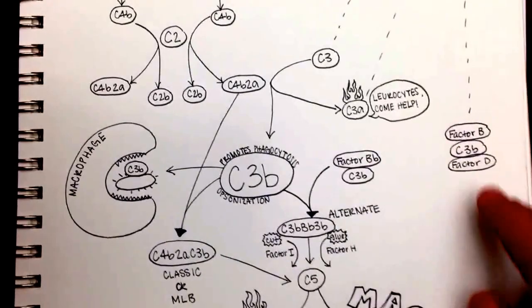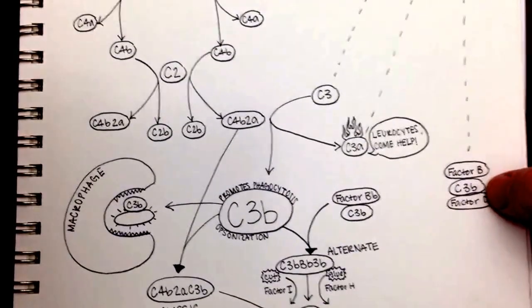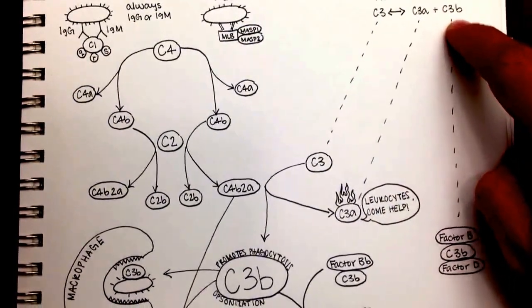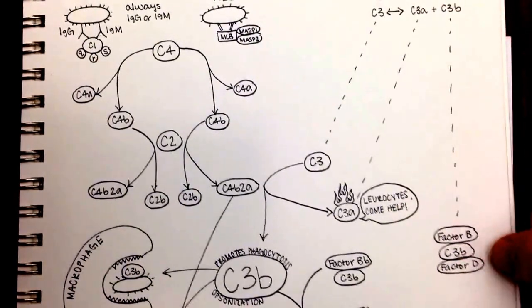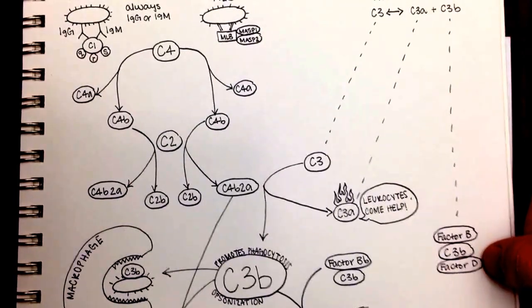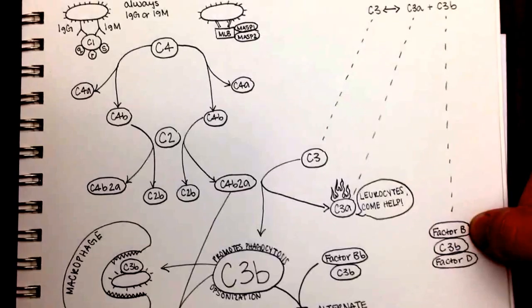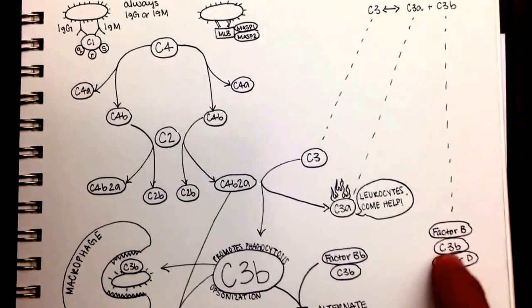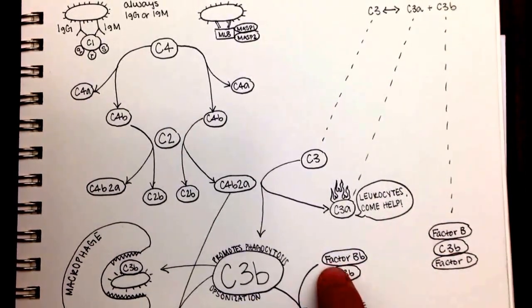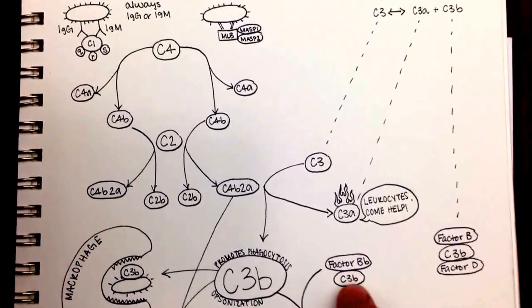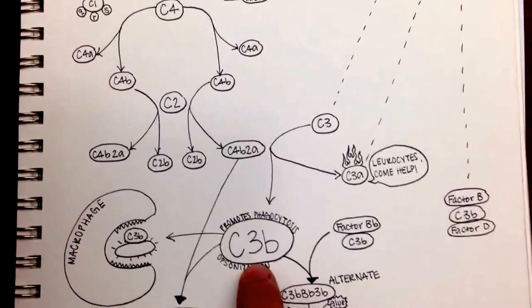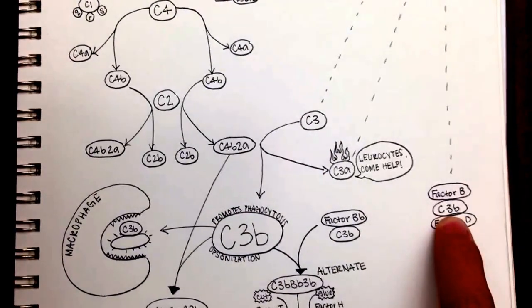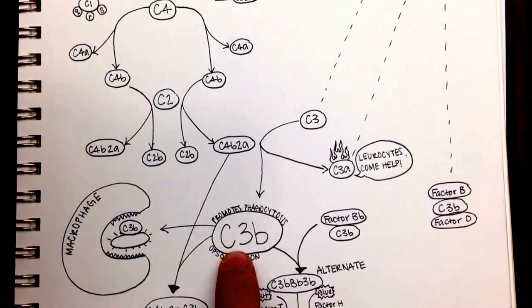So one of those C3b's from the alternate pathway, because it just spontaneously breaks into pieces, this C3b can bind to a cell along with factor B and factor D. And what those do all together is factor D will cleave factor B into an A and a B. And we can see here, we're going to keep the big part of factor B, which is going to be called factor BB, and it's going to stay bound with C3b. And so we're going to get factor BB, 3b, or C3b here. And this was our other C3b that came from these two pathways, the classical and the MLB pathway. And this was a different C3b that came from the alternate pathway. So this C3b and this C3b are really the same thing.